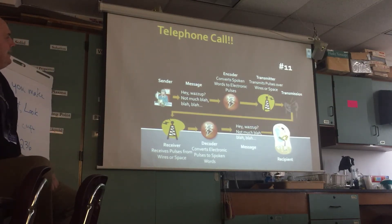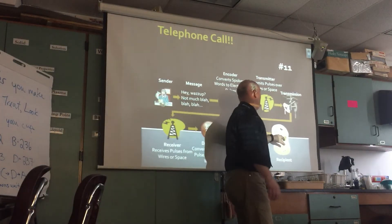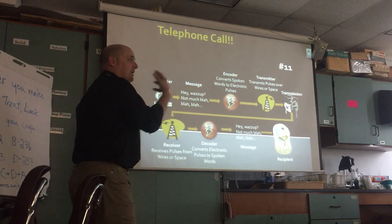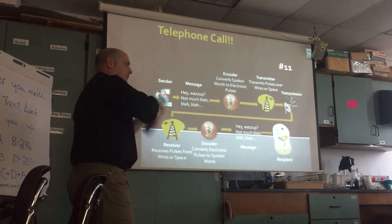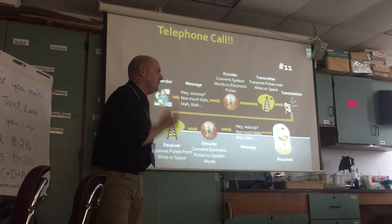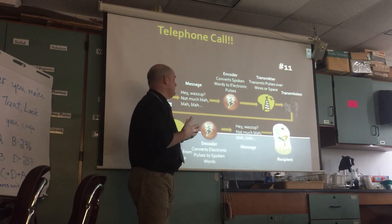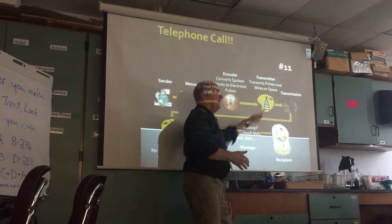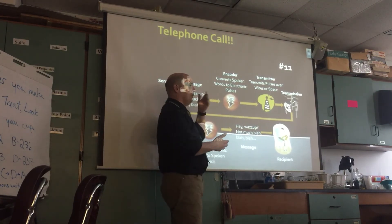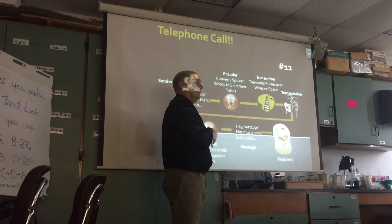Telephones and how they work. Any form of communication has three things: a sender, a recipient, and a message. A phone has four parts: an encoder, a transmitter, a receiver, and a decoder. An encoder takes your words and turns them into pulses, getting them ready to send out over the airwaves through the cell signal or through the wire of a wall phone.